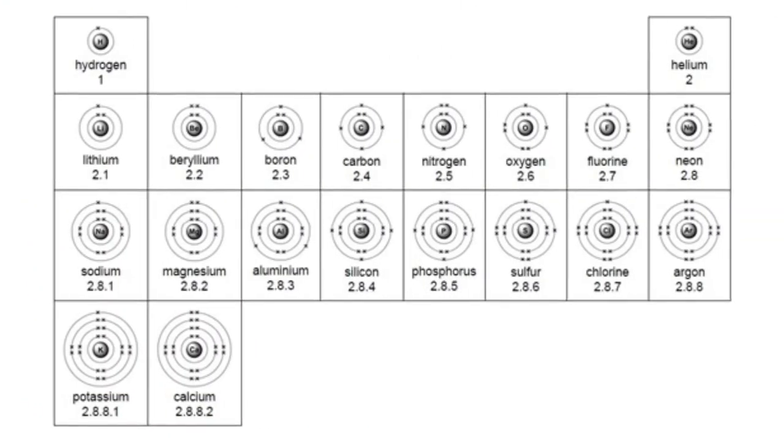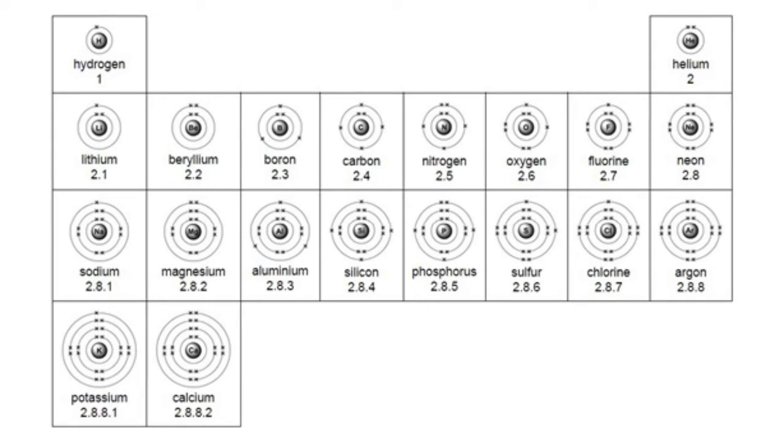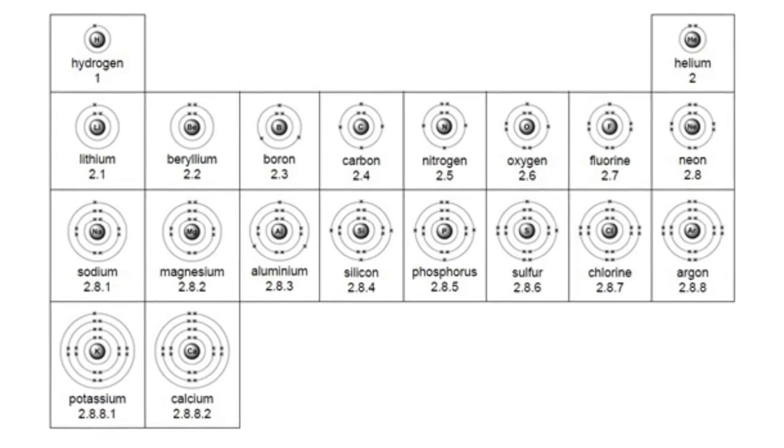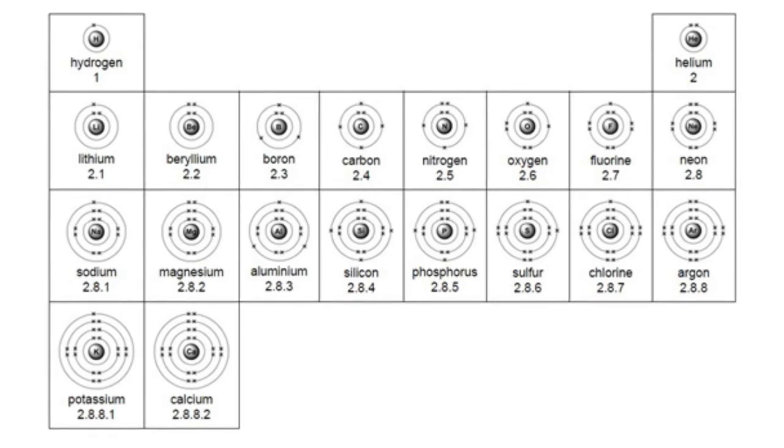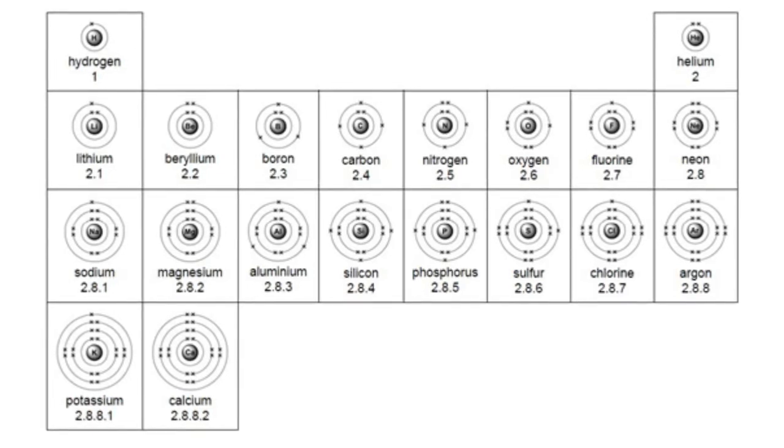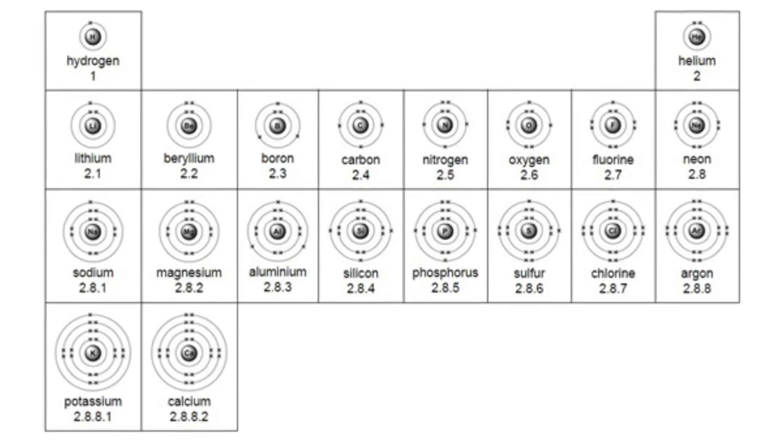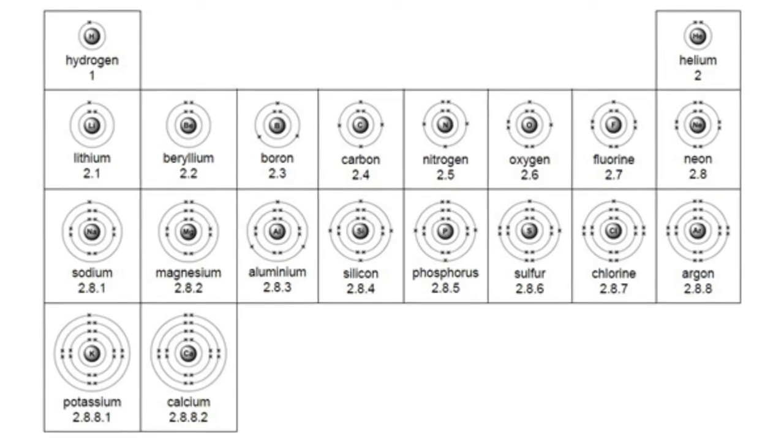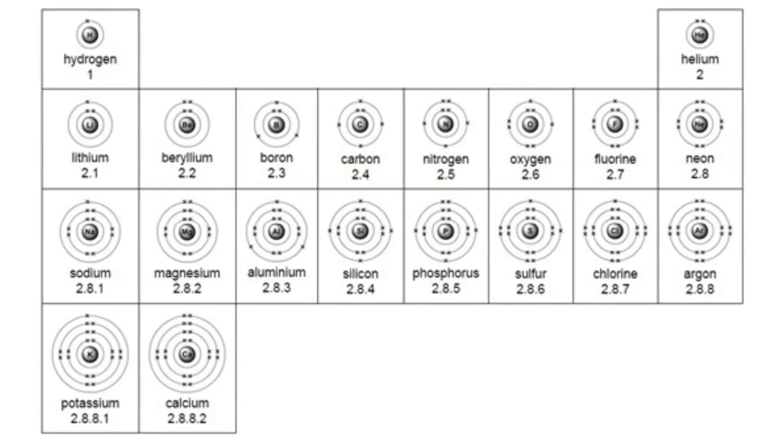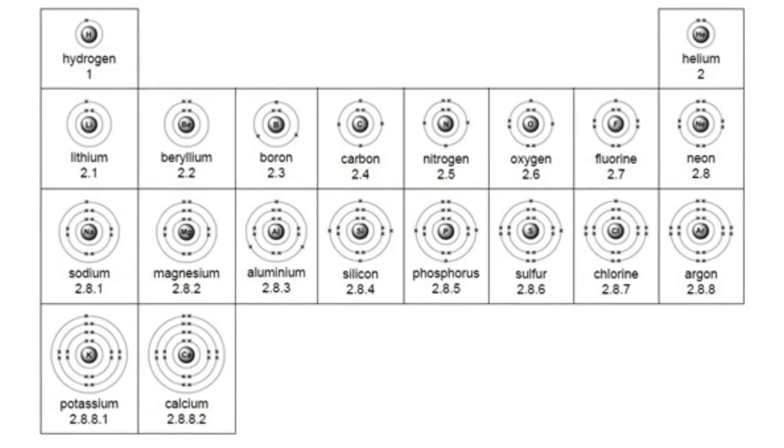Group 7 halogens also share similar chemical behaviours. They all have seven outer shell electrons. When non-metals like group 7 halogens react with metals, they have to gain an electron. We find that this is easiest for fluorine, which makes it the most reactive halogen, and therefore the most reactive non-metal on the periodic table. This is the reverse of the trend that we found with group 1 and 2 metals.